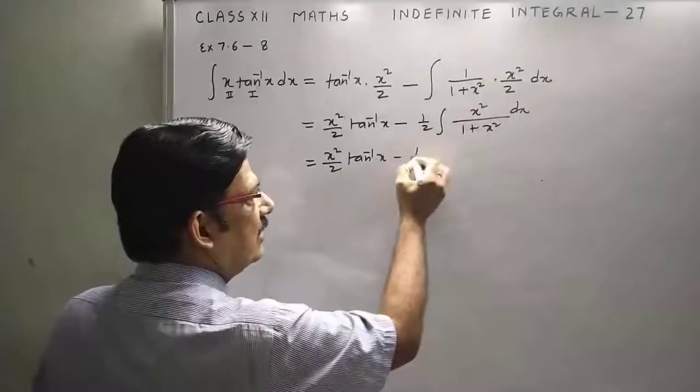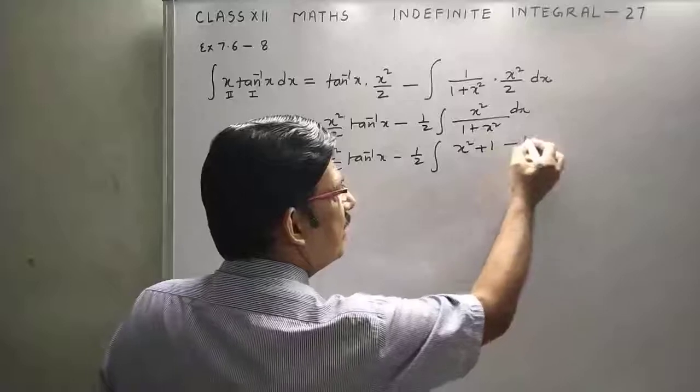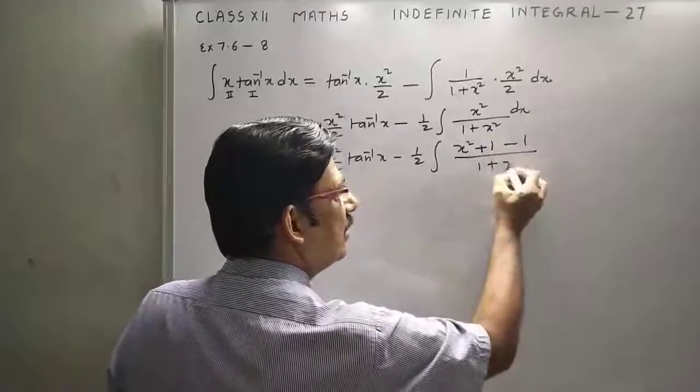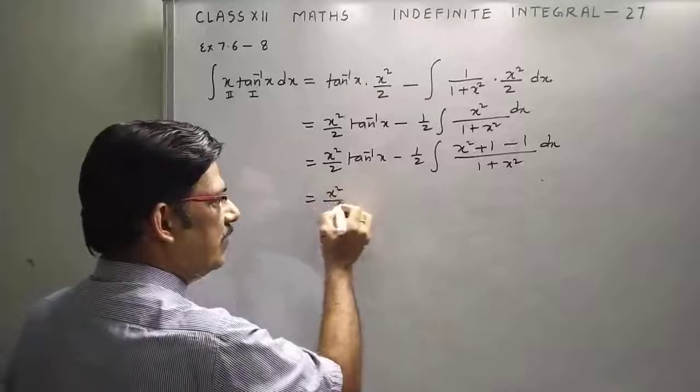Now we don't divide here, but we add 1 and subtract 1 in numerator to split into two parts. This is X square plus 1 minus 1 upon 1 plus X square.